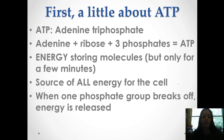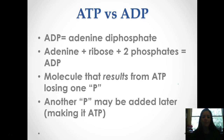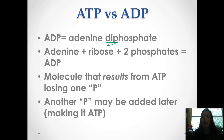Let's talk a little bit about ATP first. ATP is adenosine triphosphate — adenine, a ribose, and then three phosphates, hence the tri. This stores energy, but only very quickly for a few minutes, and it's the source of all energy for the cell. When one of those phosphate groups breaks off, it becomes ADP and that's when that energy is released. ADP is adenosine diphosphate, meaning two phosphates. When ATP is used for energy that phosphate breaks off, and then the phosphate can be added back later through a separate reaction, which creates more ATP for the cell.